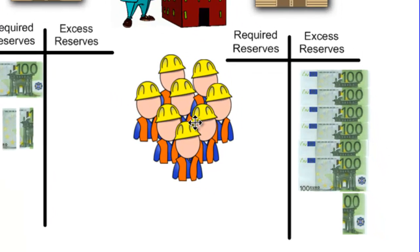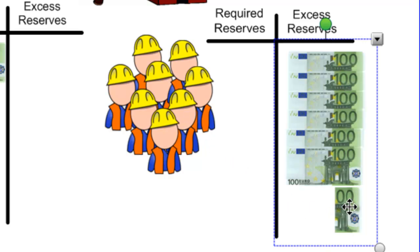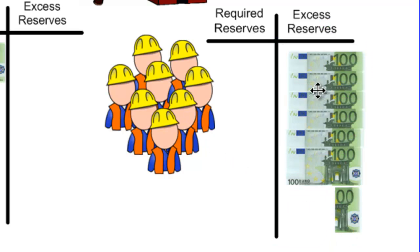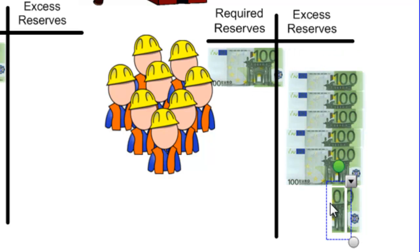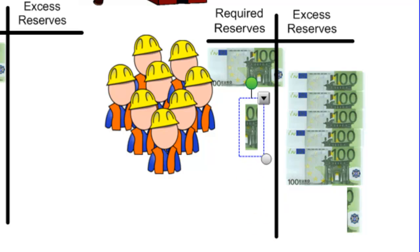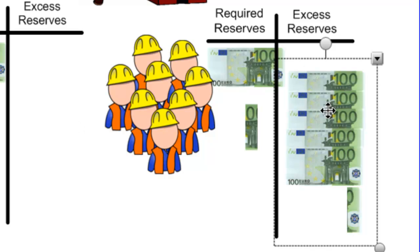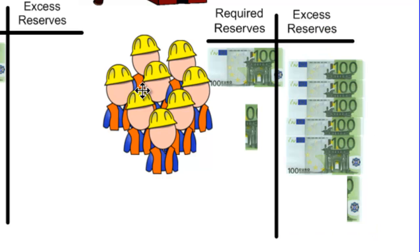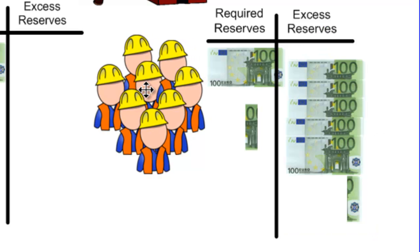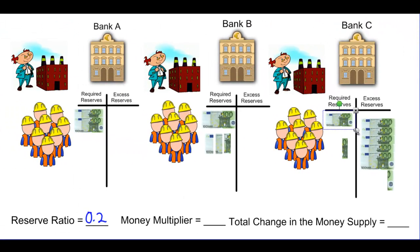There are now 640 euros in the banking system created through Bank B's lending. With the required reserve ratio of 0.2, 128 euros must be added to Bank C's required reserves, leaving Bank C with 512 euros in its excess reserves. Of course this process will continue — Bank C will lend out its excess reserves to yet more borrowers who will spend that money on the production of goods, employ more workers, and ultimately deposit it in yet another bank. All along the way, more money is being created.